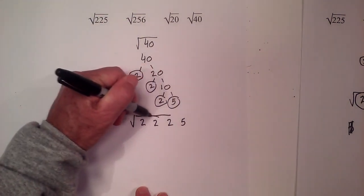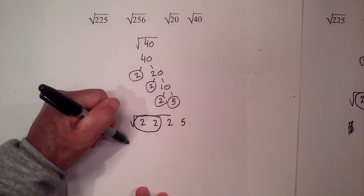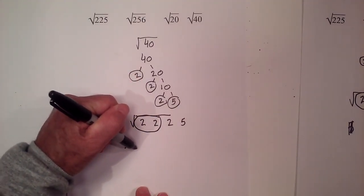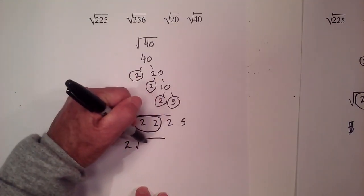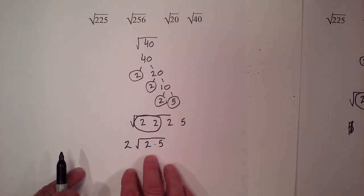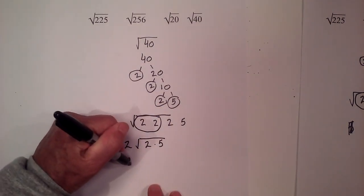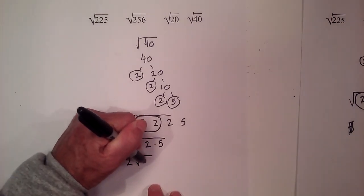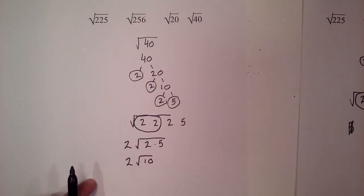The pair of 2's will go out of the radical sign, and so now I have 2 and 5 on the inside. I can then multiply these together: 2 times 5 is 10. So the square root of 40 is 2 times the square root of 10.